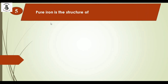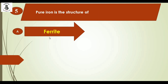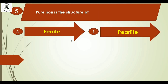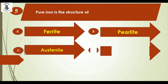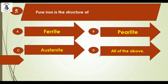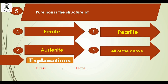Pure iron has the structure of: option A ferrite, option B pearlite, option C austenite, and option D all of the above. Pure iron is the structure of ferrite. As per the iron-carbon diagram, it will be alpha ferrite. The right answer is option A.